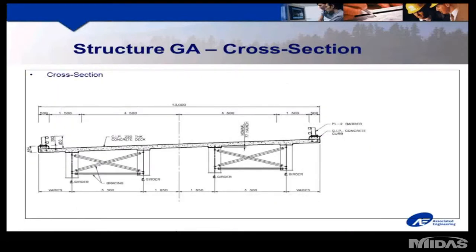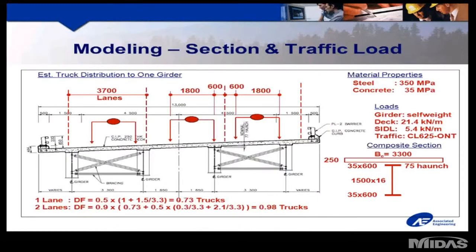For both examples, we will assume the same four girder cross-section. Our objective will be to develop our preliminary design based on what we consider the critical loading onto the critical girder. For this girder configuration, it's apparent that three lanes can fit over the bridge, and the first interior girder can be loaded most heavily. We are just not certain if one or two lanes is more critical, because there is a reduction factor for multiple lanes. The single truck is positioned with one wheel directly over the critical girder, and a distribution factor of 0.73 trucks is calculated. Placing a second truck alongside and using a 90% reduction factor, we see that two lanes is the most critical, with a distribution factor of 0.98 trucks.